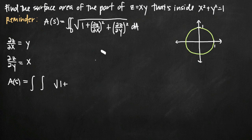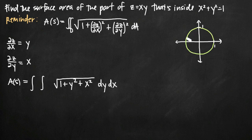We have 1 plus the partial derivative with respect to x, which is y, squared to get y squared, plus the partial derivative with respect to y, which is x, squared to get x squared, all under the square root. Then dA gets replaced with dy dx because we're treating this as a type 1 region. We can draw vertical cross sections to find the area, so we integrate first with respect to y and then with respect to x. The inner integral will have limits with respect to y since dy is on the inside.